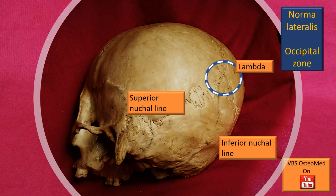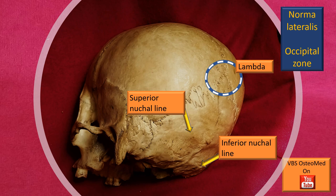Shifting focus to the blue-white dotted circular area, I have identified a junction called lambda. That junction is the point where the sagittal suture and the lambdoid suture meet. In other words, it is where the interparietal suture meets the parietal occipital suture.